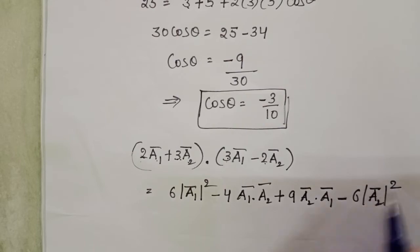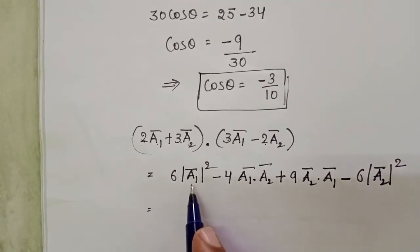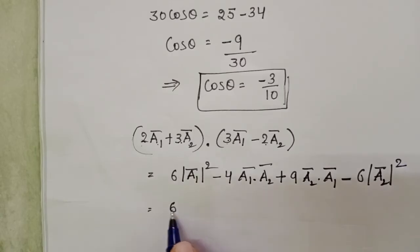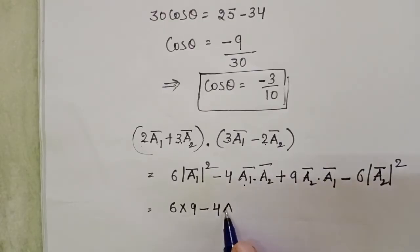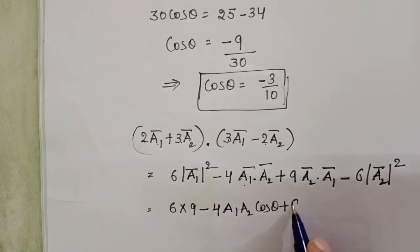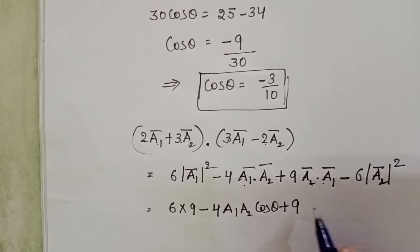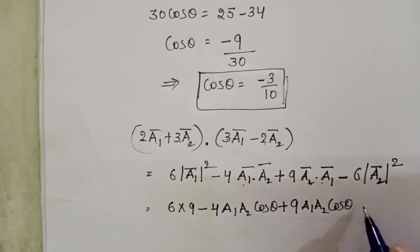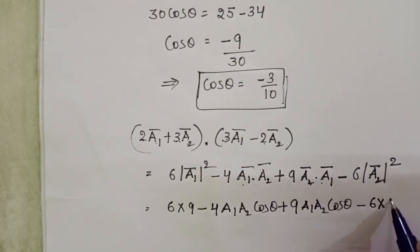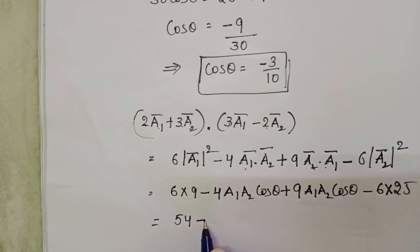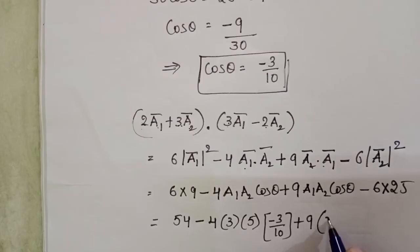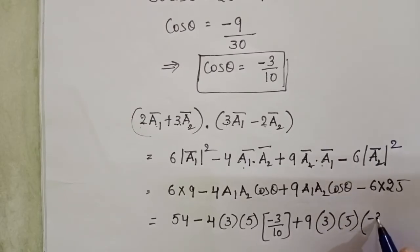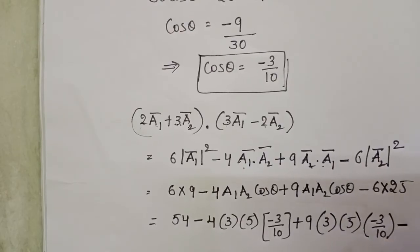Since a1 dot a1 equals mod a1 squared, and magnitude of a1 is 3, we get 3 squared equals 9. So the expression becomes 6 times 9 minus 4 times a1 a2 cos theta plus 9 times a1 a2 cos theta minus 6 times mod a2 squared. Substituting a1=3, a2=5, cos theta = minus 3 over 10: 54 minus 4 times 15 times (minus 3/10) plus 9 times 15 times (minus 3/10) minus 6 times 25, giving 54 plus 18 minus 40.5 minus 150.